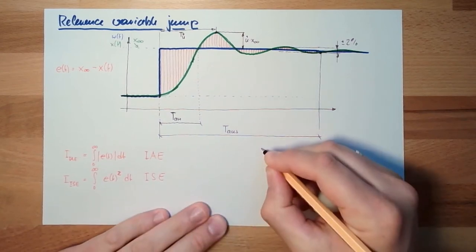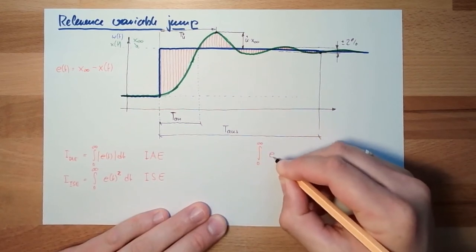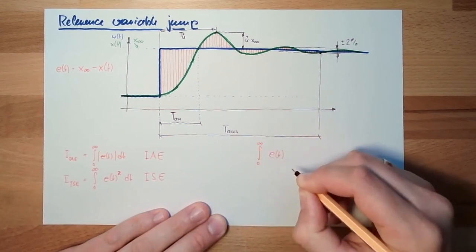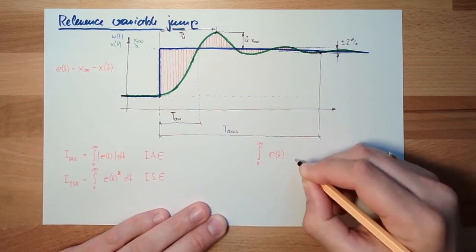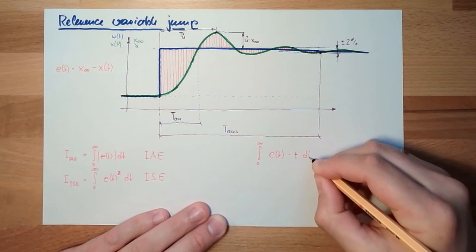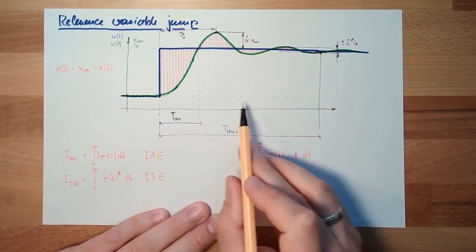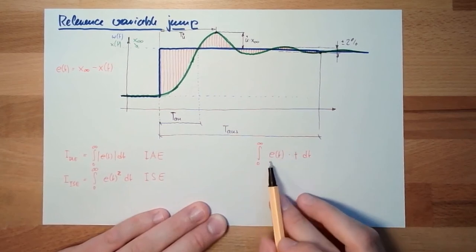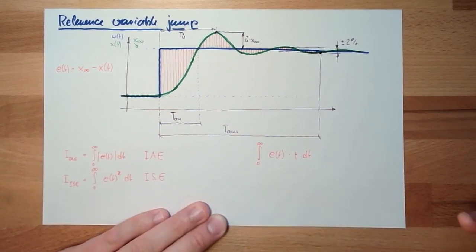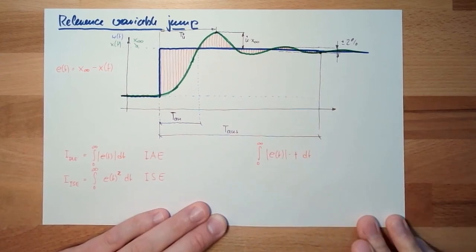So we could simply summarize from zero to unlimited, again the error, and multiply this with t. Then, the bigger t is, t starts here, the bigger t is, the more severe the error will be taken into account. And of course, I can do it also with the absolute value here.